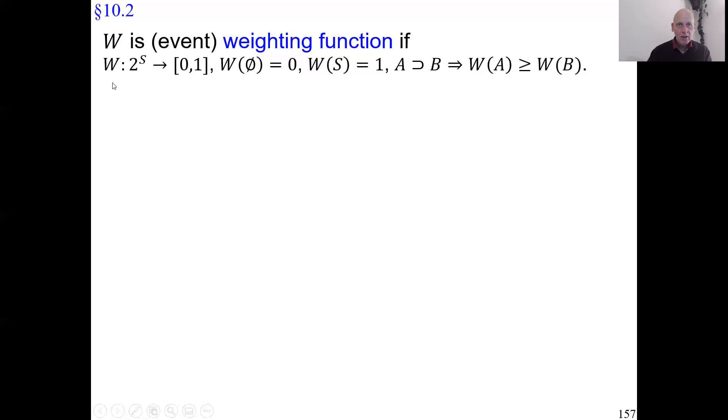W function set to each event assigns a number between zero and one in such a manner that the empty event gets weight zero, the universal event gets the normalized weight one. We have monotonicity with respect to set inclusion, so a superset has a bigger weight.